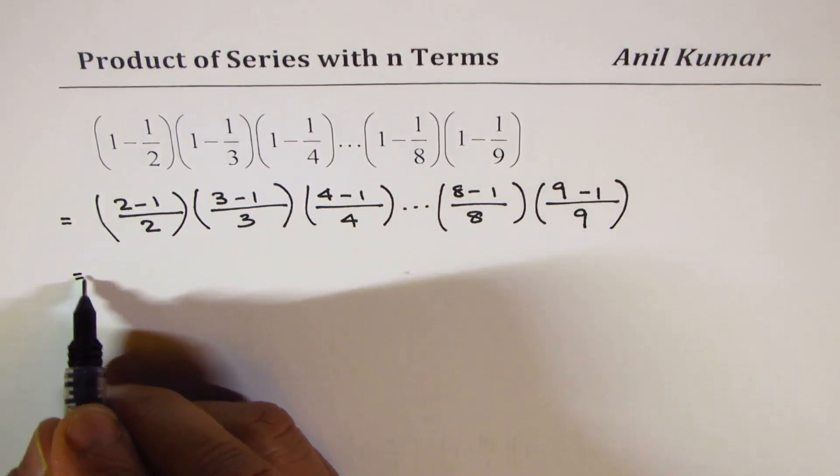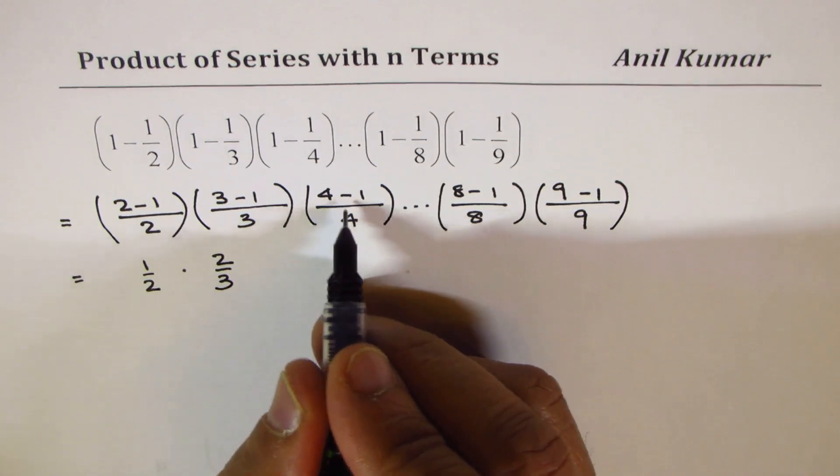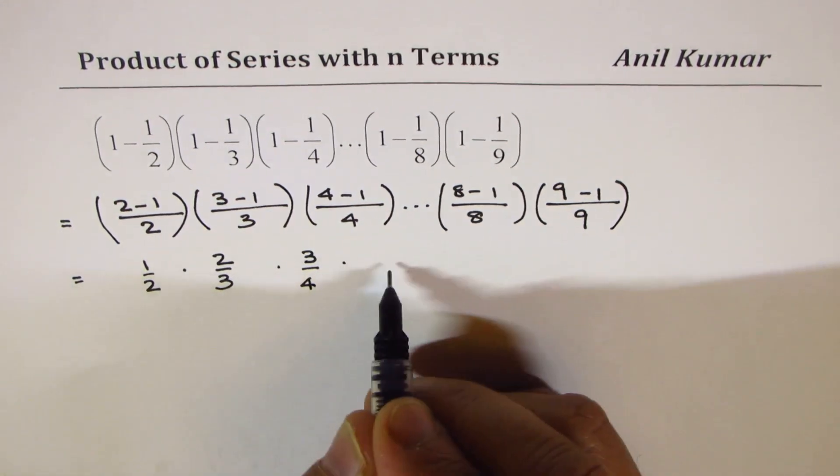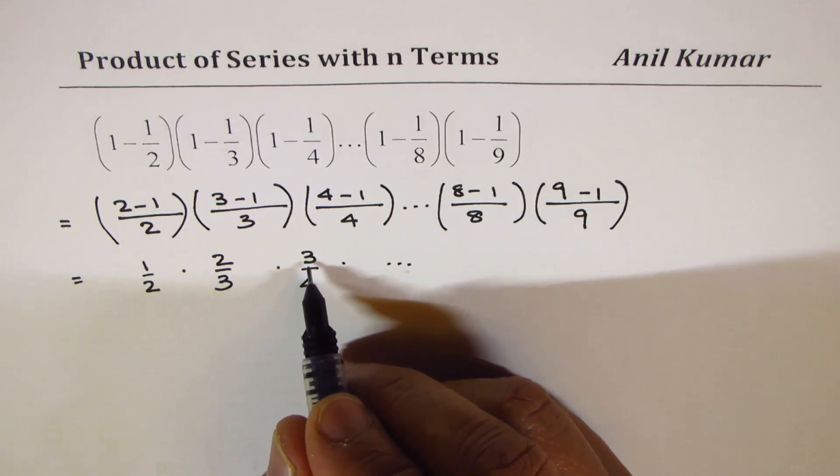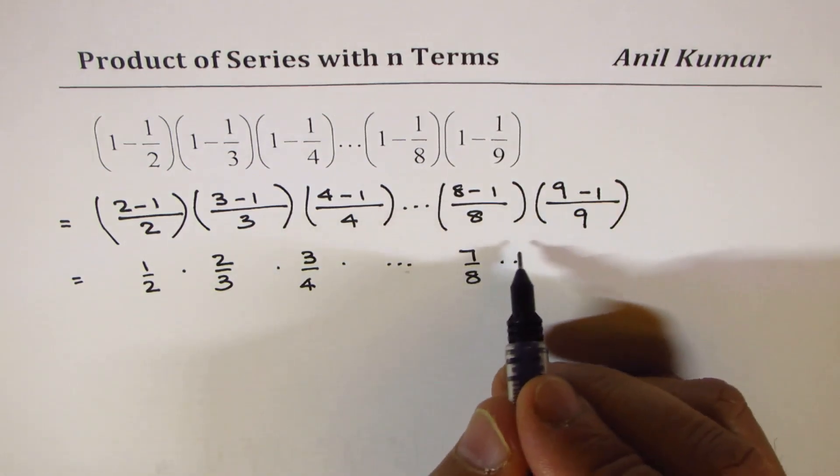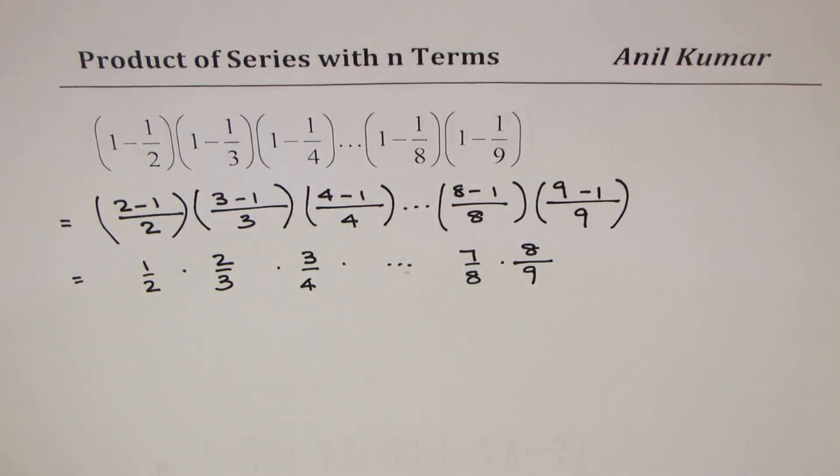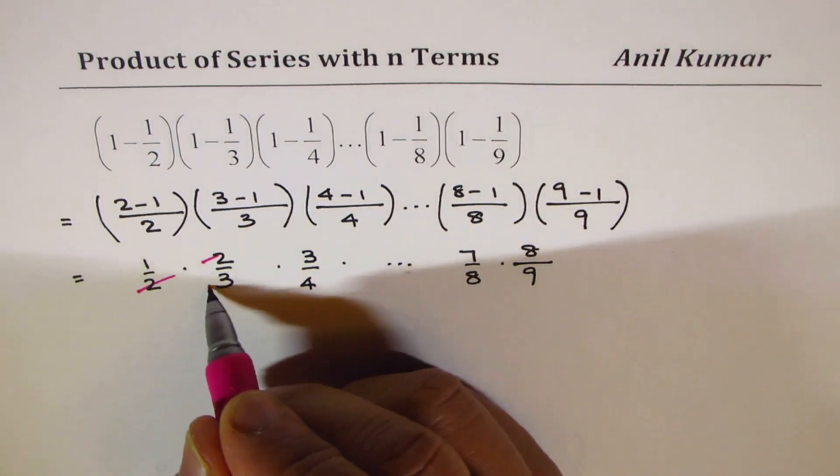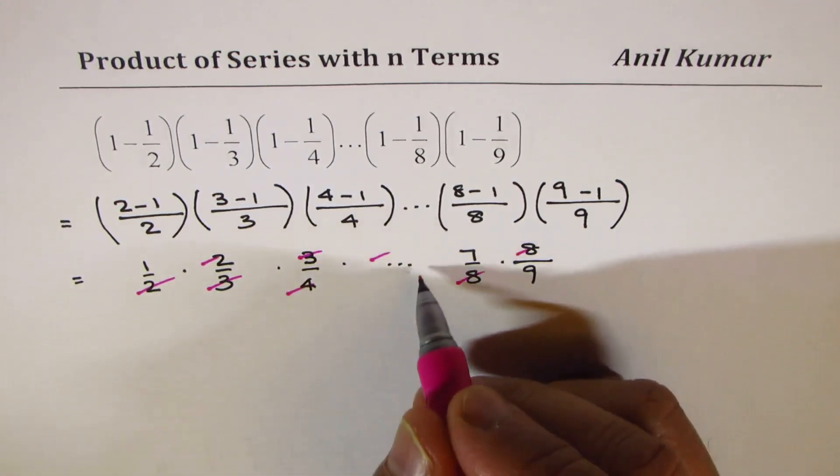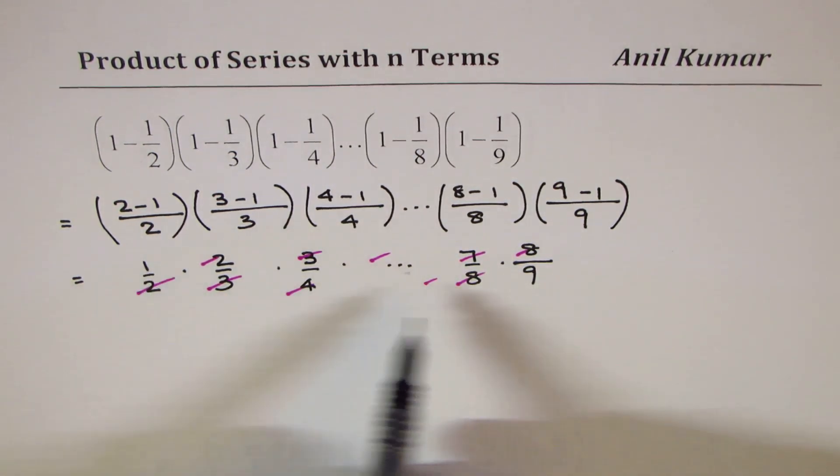So, that gives you 1 over 2. This gives you 3 minus 1 as 2 over 3, and then we get 3 over 4, and so on. One number is lower numerator, 1 less than the denominator. So, here we get 7 over 8. This is the next one, so let me write here as 8 over 9. From this series, you can easily see that we can cancel out these numbers. So, it goes up to n. This 7 will get cancelled with that 7. We get 1 over 9 as our result.